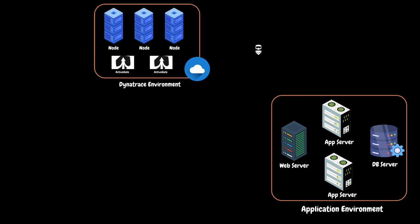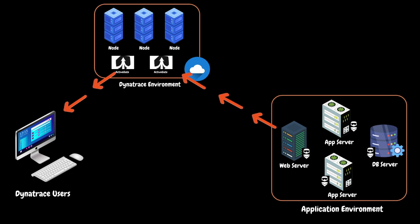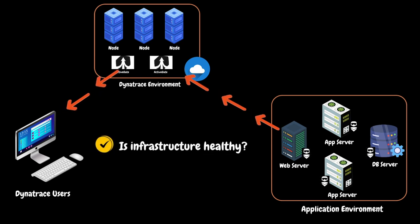To monitor the application environment, we need to download the OneAgent from the Dynatrace cluster and install it on each server. This way, the OneAgent will start monitoring various aspects of each server and gather data points such as server health and application health. After that, the agent will send the gathered data to the Dynatrace environment via ActiveGates. This is the place where all the monitored server data will be stored. The Dynatrace users such as administrators or application users will then retrieve the data using the Dynatrace user interface to understand if their application infrastructure is healthy or if there are any OS-related issues.